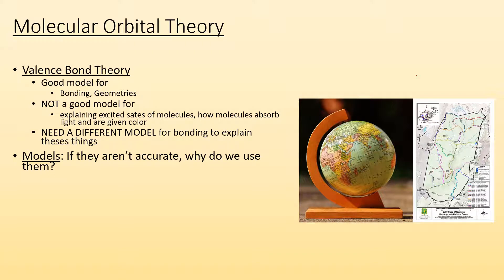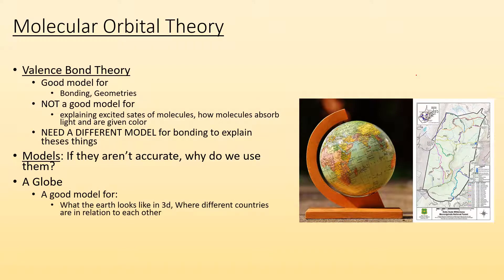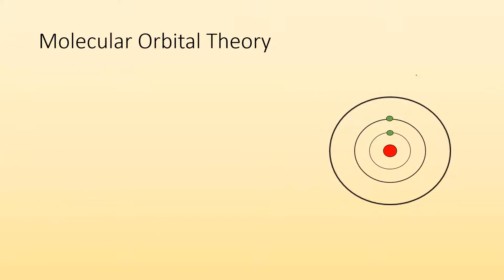You may feel betrayed, like why am I learning about valence bond theory if it's not accurate? I want to remind you that a globe is a model of the earth — it's great for showing what the earth looks like in 3D and where different countries are in relation to each other. But you're not going to bring a globe when you need to get to the pizza place or go hiking. So depending on what you're trying to use the model for, you might want to use a different model.